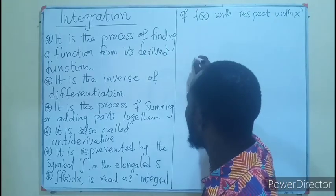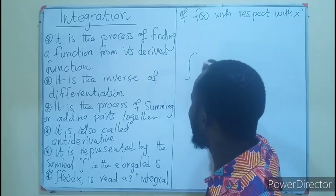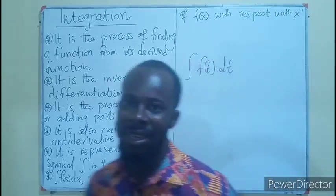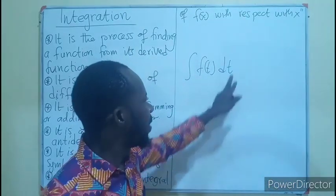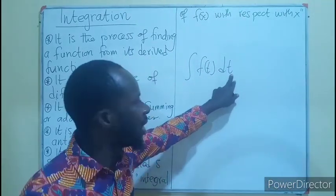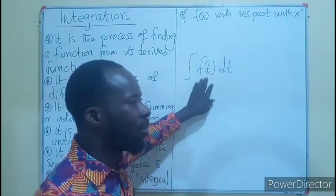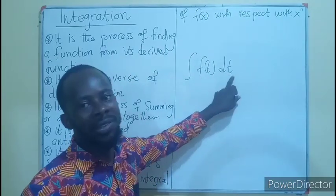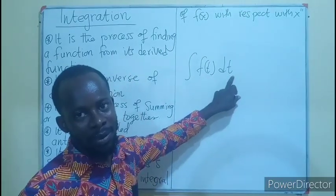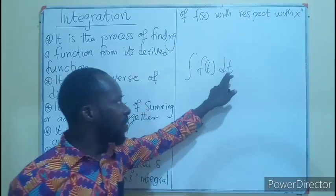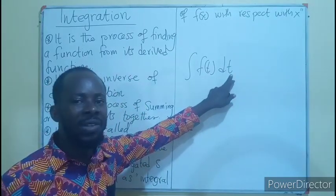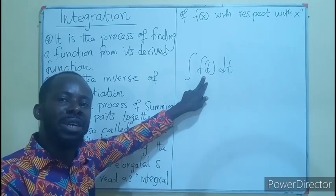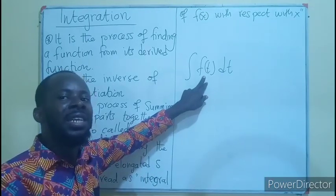The dx here is only telling us which variable is to be integrated. So it means I can have the integral of a function of t, with respect to t. The T here is only telling me that the variable in the function I am to integrate is going to be T. So whatever variable we see there, it tells us which variable in the function is to be integrated.